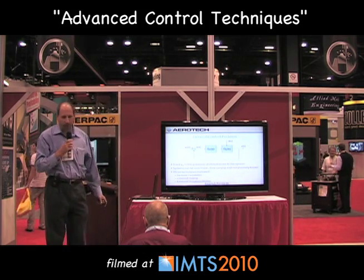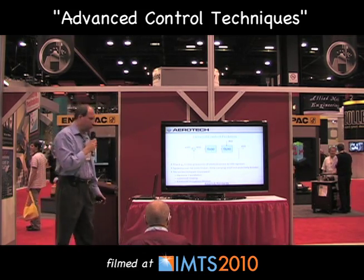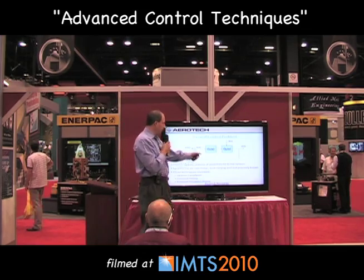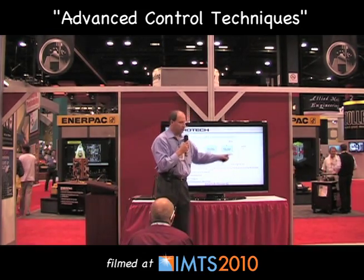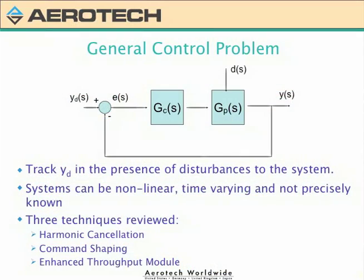I'm sure we're all familiar with the general control problem, just to set the stage. I have some controller, I have a plant, I have an output that I'm interested in controlling, and in the presence of some disturbances I need to track some signal Y as closely as I possibly can. I'm going to show you three techniques: harmonic cancellation, command shaping, and the enhanced throughput module.